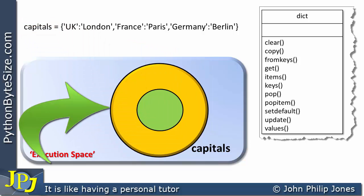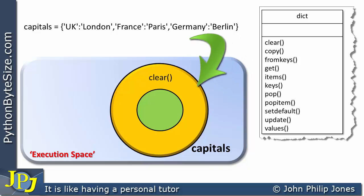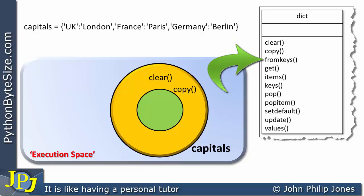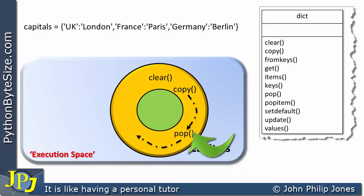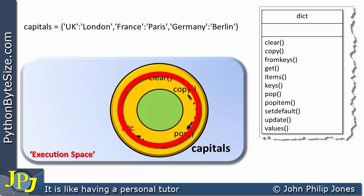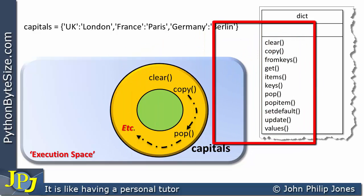This object is going to be based on this class. So we can look at the object and say what it's going to have. It's going to have, to start with, this particular method here — clear — appearing within the object. And of course it's also going to have copy. Looking down the list, we can see we have fromkeys, get, items, keys, pop, and we can go all the way around to the pop method, and then of course we have the remaining methods. This particular object will have all of the methods as they were defined in the class, because this object is based on this particular class.